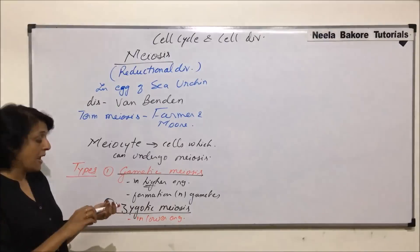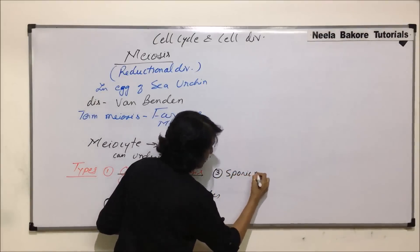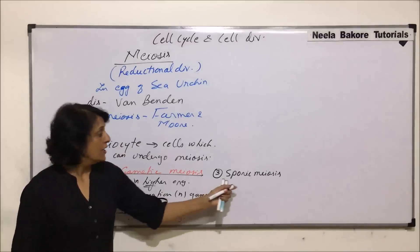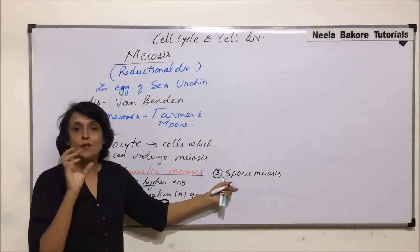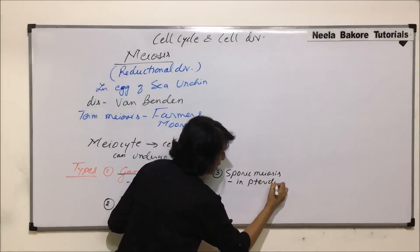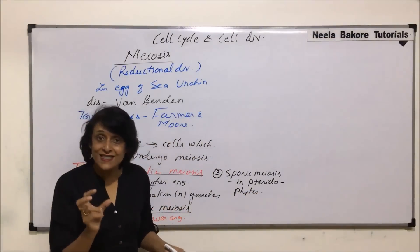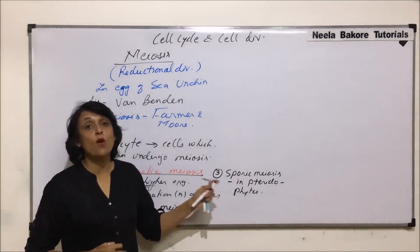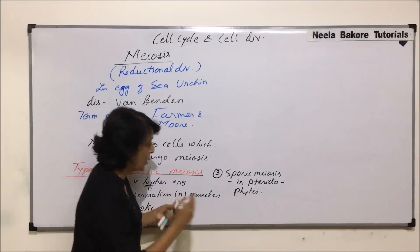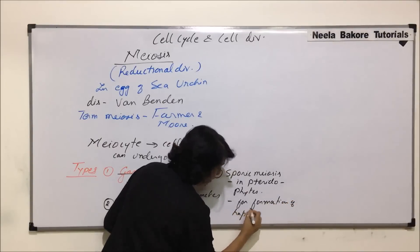The third type is known as sporic meiosis, and as the name tells us, it helps in spore formation, especially in pteridophytes. The spore mother cell is diploid. This is also seen in angiosperms and gymnosperms, where the spore producing cell — the microspore mother cell or megaspore mother cell — when they divide, they produce haploid spores.